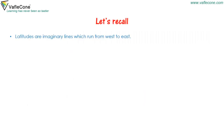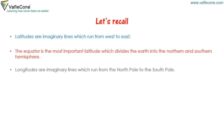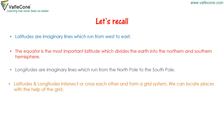To summarize: latitudes are imaginary lines which run from west to east. The equator is the most important latitude, which divides the earth into the northern and southern hemispheres. Longitudes are imaginary lines which run from the north pole to the south pole. Latitudes and longitudes intersect and form a grid system which we can use to locate places and calculate time.